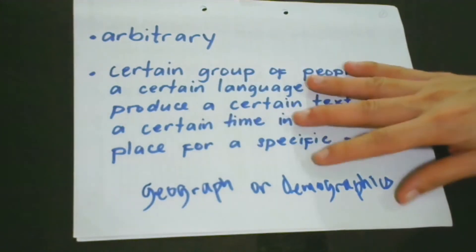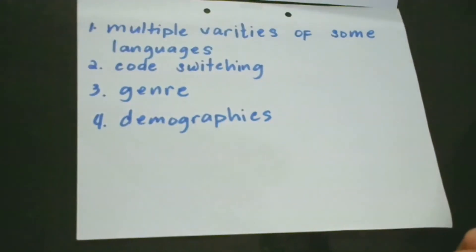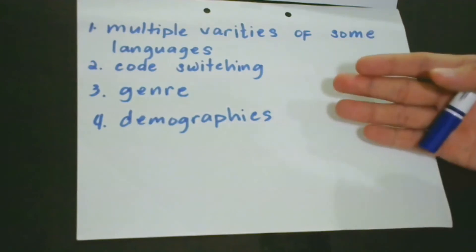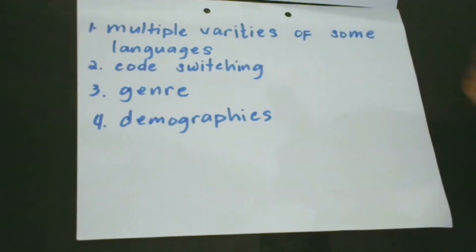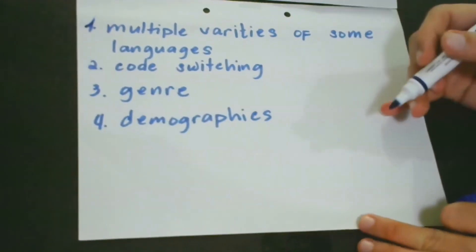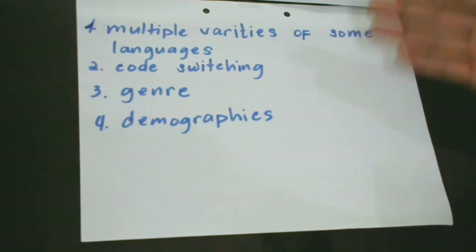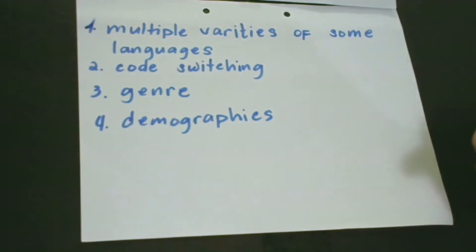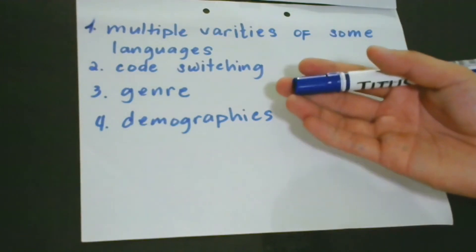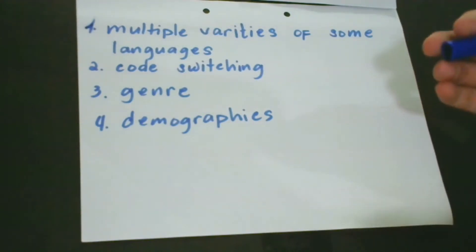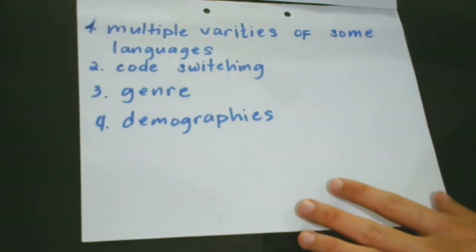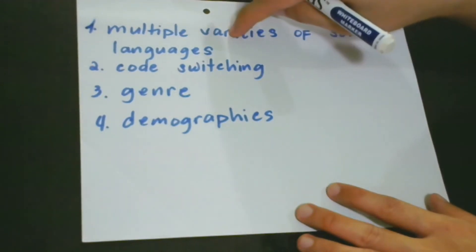Processing of natural language is affected by the different dimensions of variation in language. The first one is that some languages have multiple varieties. These are called regional dialects or tribal dialects. Countries like India and the Philippines are the best illustrations for this.